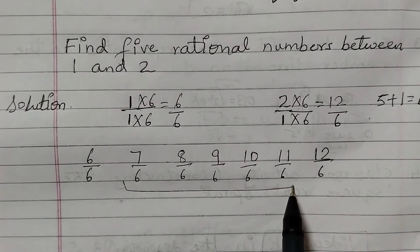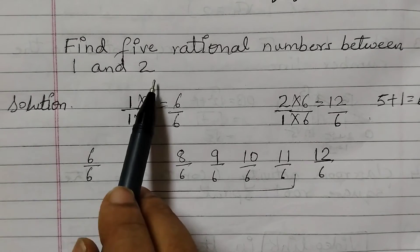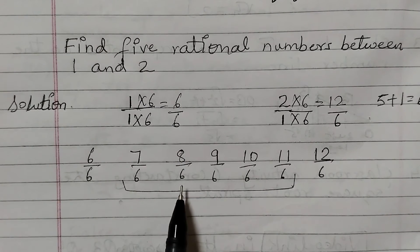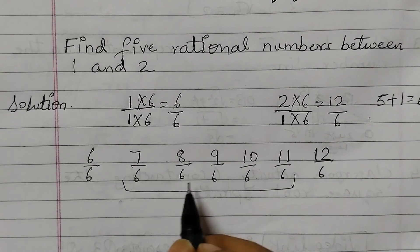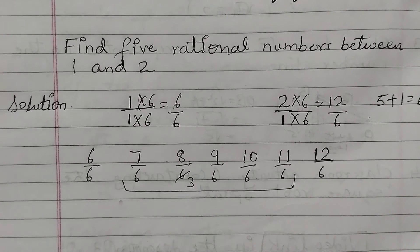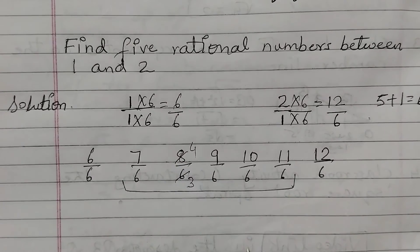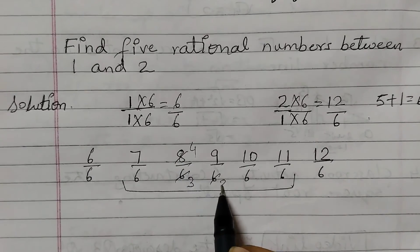All these numbers lie between 1 and 2. Now wherever possible, cancel out the common factor. Like 2 times 3 is 6, so that's 3. 2 times 4 is 8, 3 times 2 is 6.